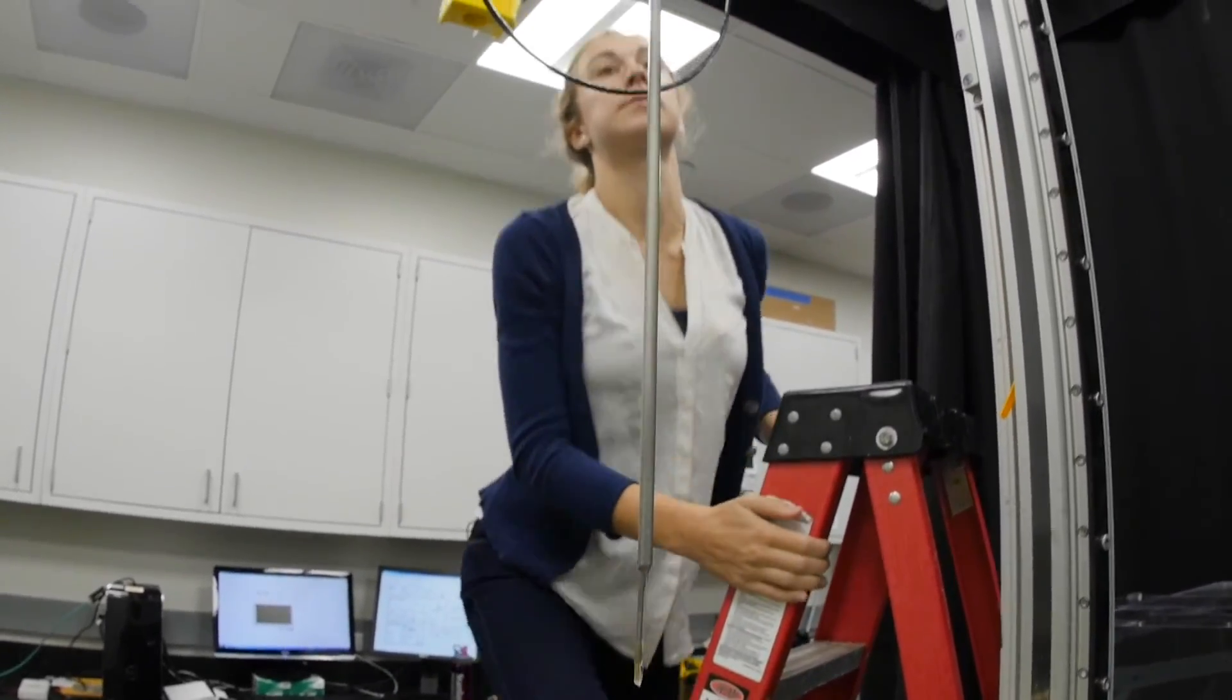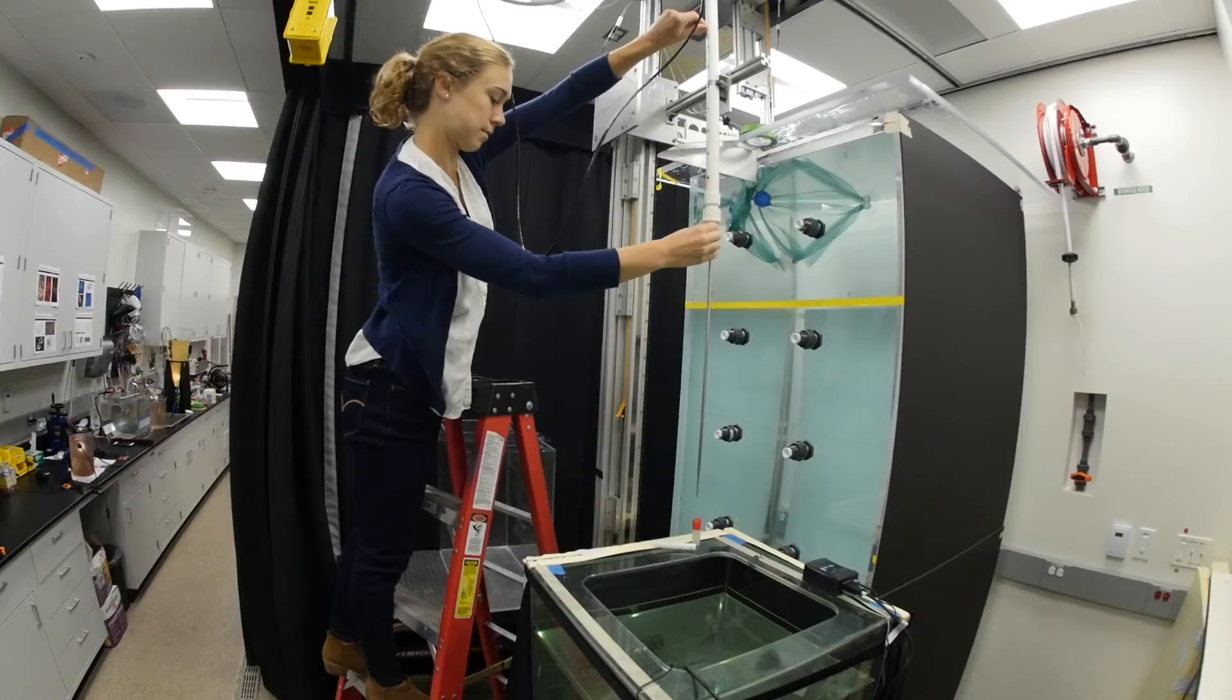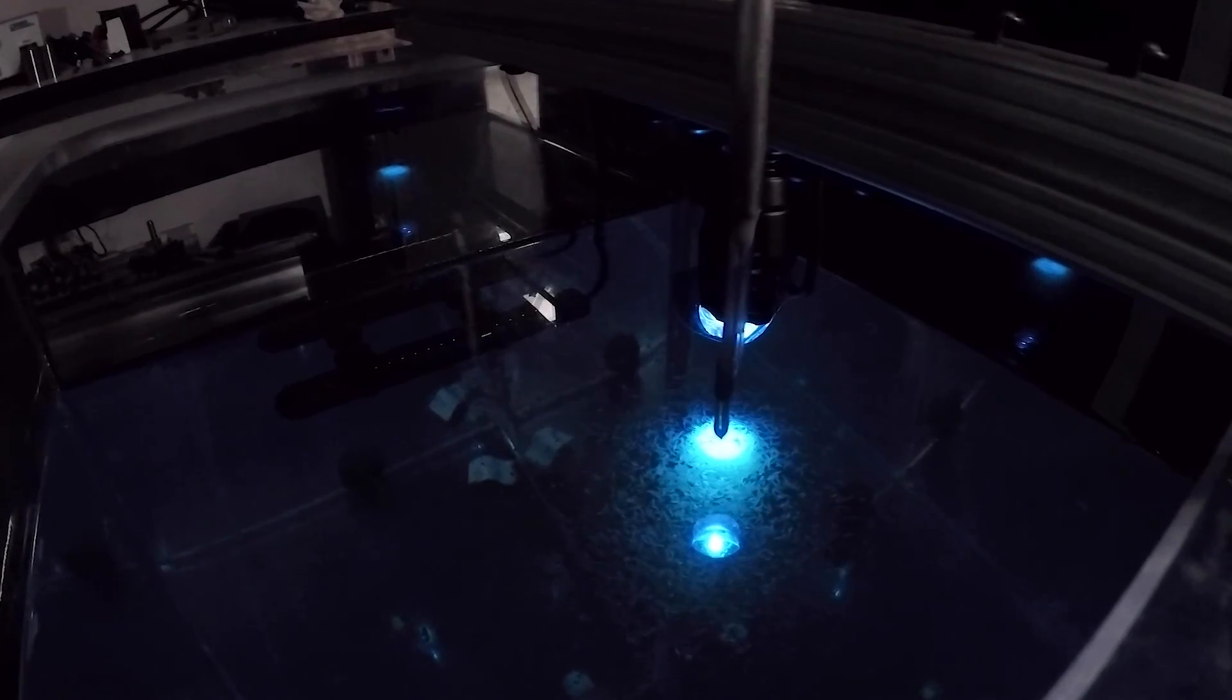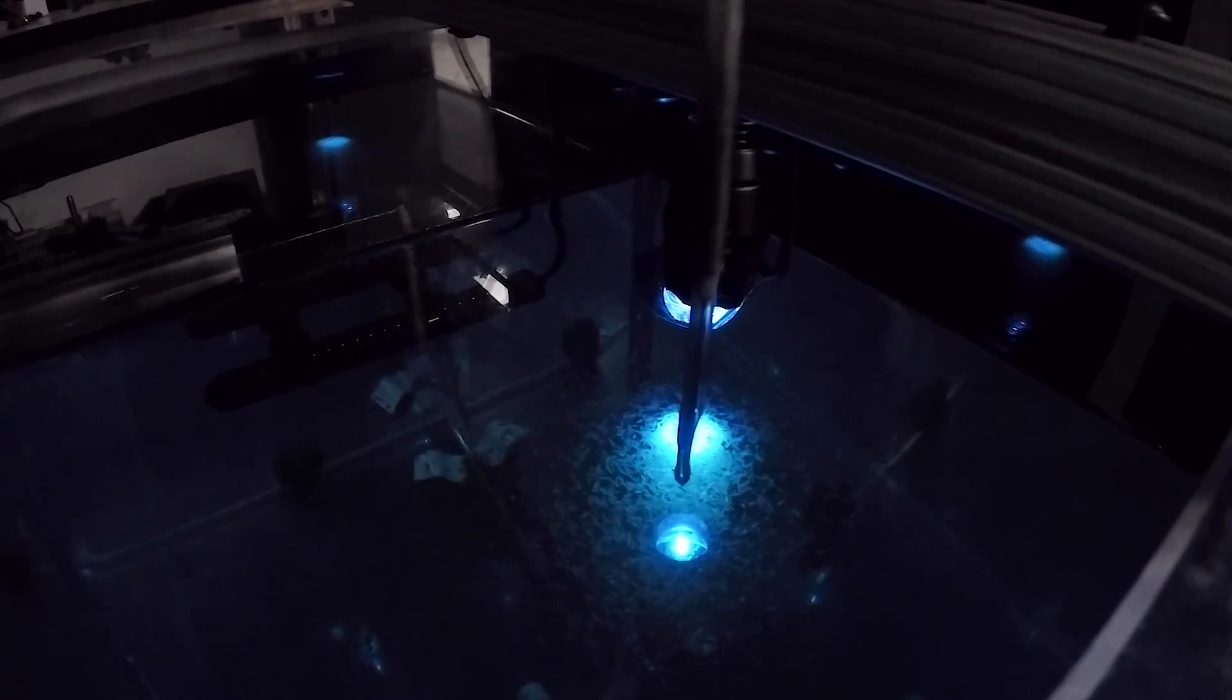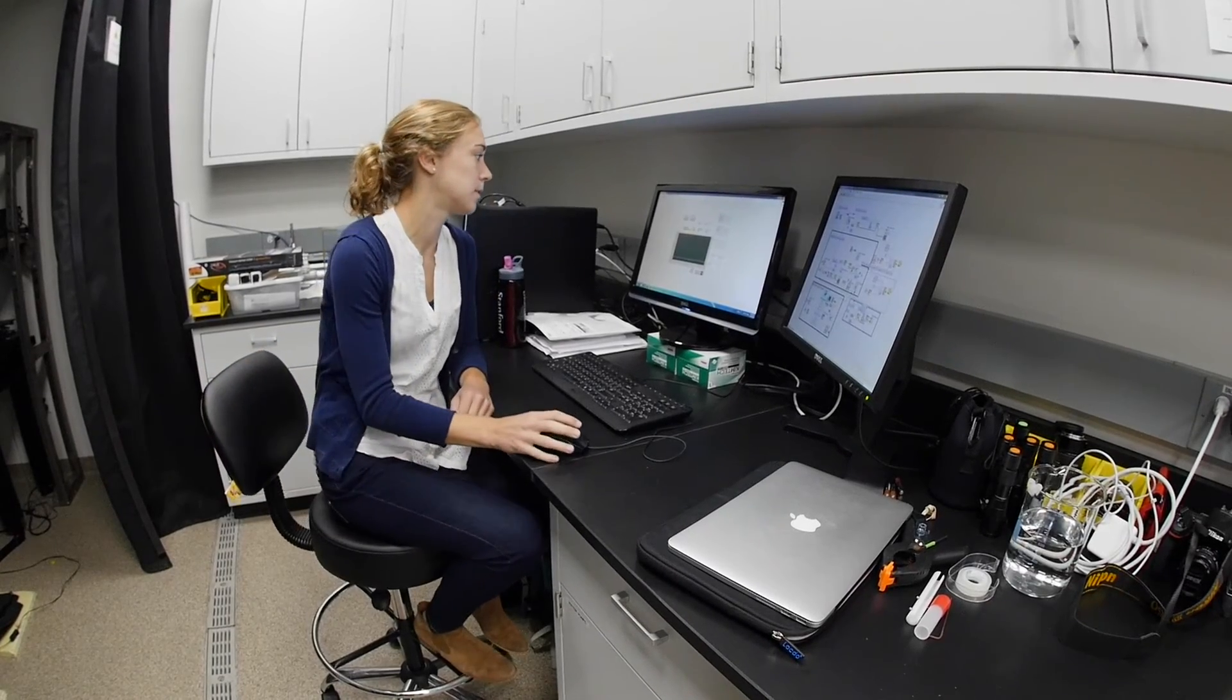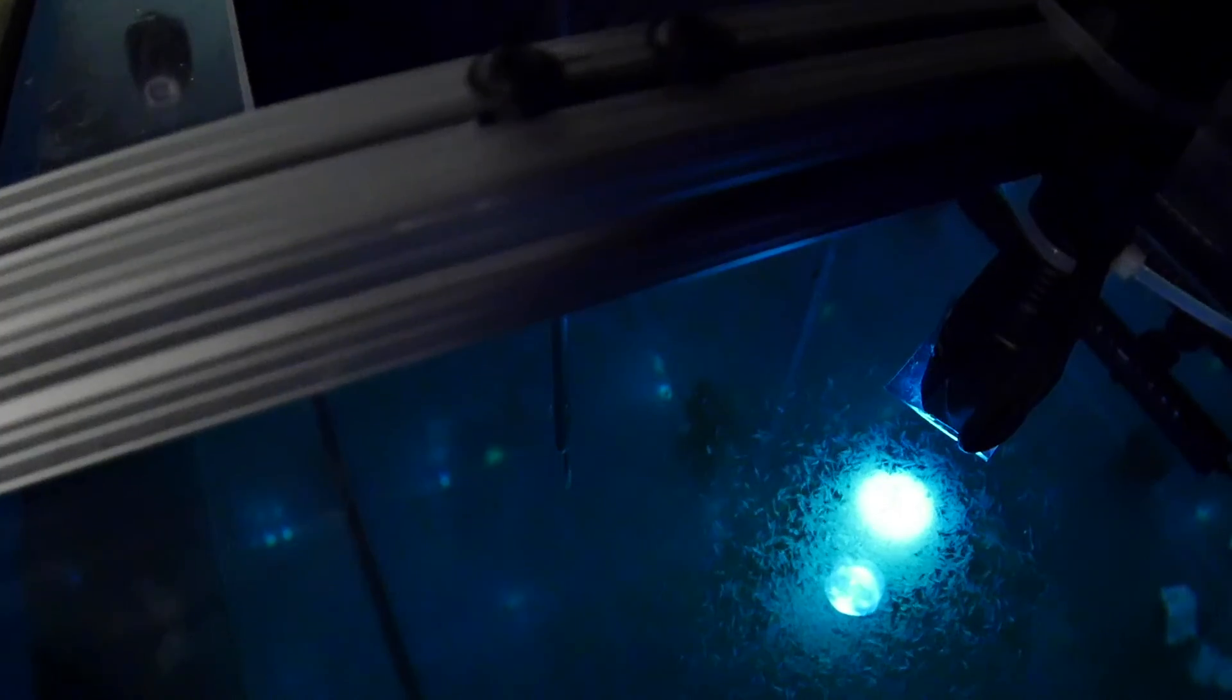In the lab, they recreate the vertical migrations using sensors and high-speed cameras to follow what happens as the shrimp swim through different concentrations of salt water. We can actually do laboratory experiments with them to really fully understand the fluid dynamics of what's occurring when you have a migration of a swarm through a stratified water column.